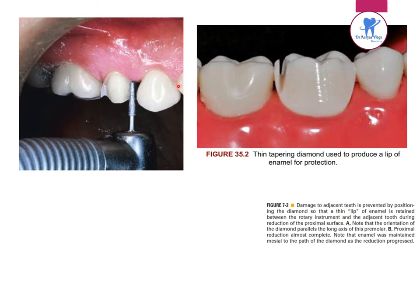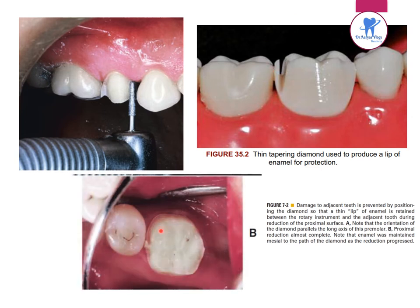A thin tapering diamond is used to produce a lip of enamel for protection. This picture shows the proximal reduction which is almost complete, with enamel maintained mesial to the path of the diamond as reduction progressed. Iatrogenic damage to the adjacent tooth is a common error in dentistry.